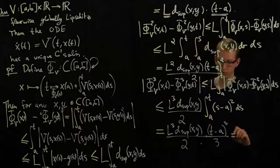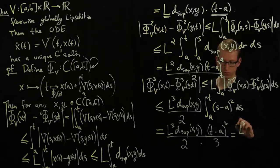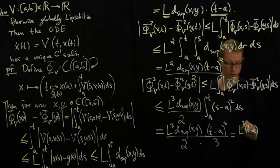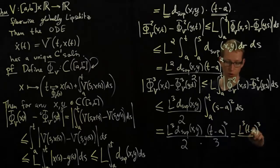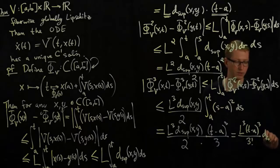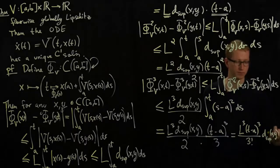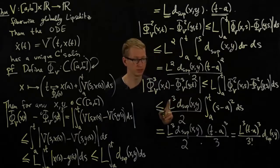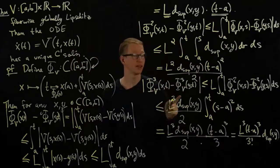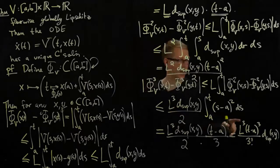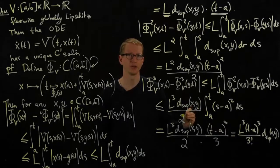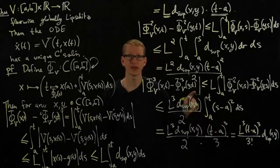Rewriting this, this looks like L cubed times T minus A cubed over 2 times 3, which is 3 factorial, times the distance between x and y. And in fact, more generally, it's true that if I replace this 3 by N and I keep doing this procedure, I will get something of the form some number raised to the nth power divided by N factorial.